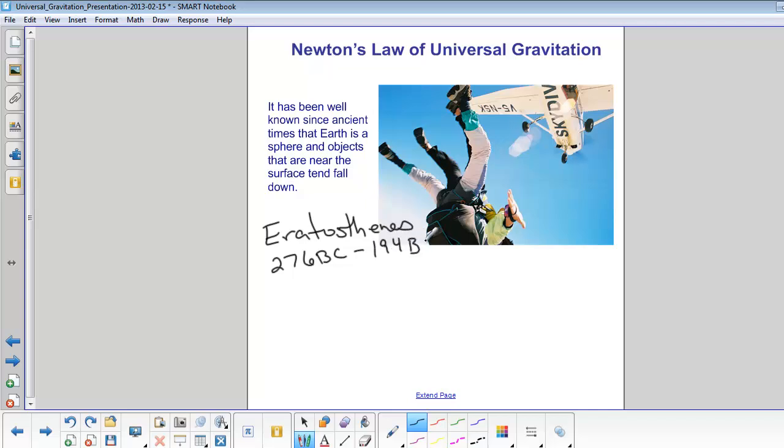So imagine this, here is the Earth in space, and the sun's rays are coming in basically parallel to each other.